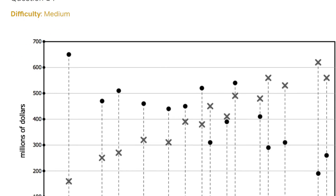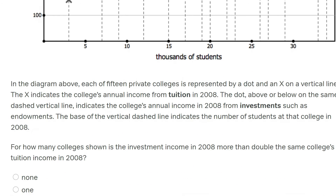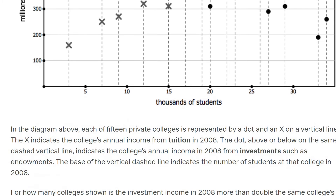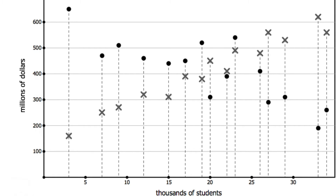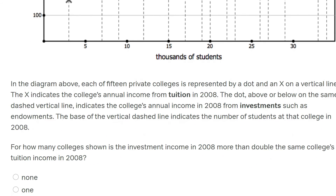Now the next one — medium level. As you can see, the graph looks complicated. We've got millions of dollars on the left, thousands of students on the right, and quite a complicated looking graph, with quite a few words beneath it. But here's the really important thing: we're not going to be intimidated. You ask yourself right now, are you intimidated by this question? I really hope you said no, because we've got to overcome that intimidation and just trust that the question is easier than it looks.